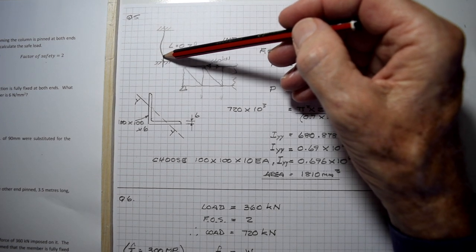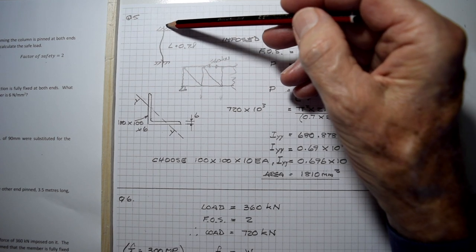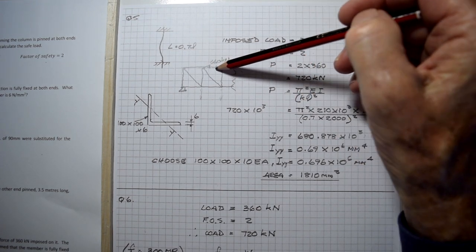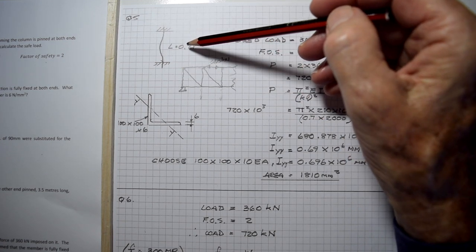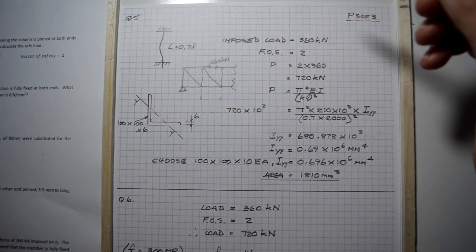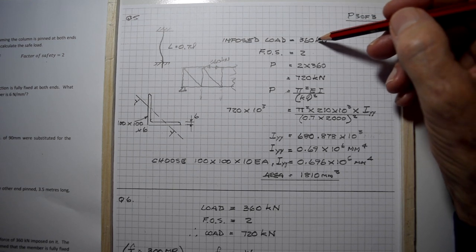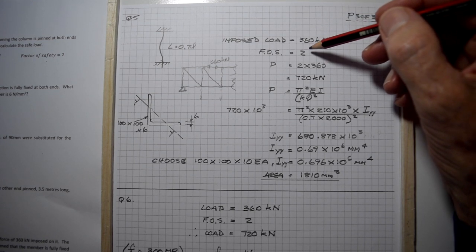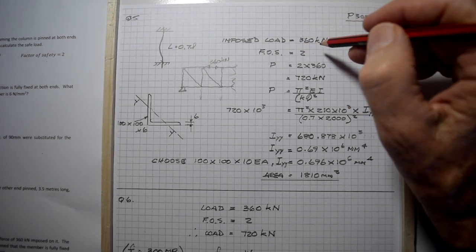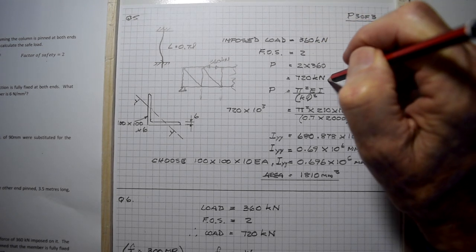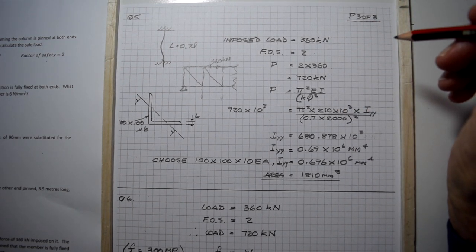The member is fully fixed at these points. This is the top chord - though I've drawn it vertically, it's actually horizontal - the end fixity gives us a factor of 0.7. The total load is 360 kilonewtons and we use a factor of safety of two, escalating the load to 720 kilonewtons.